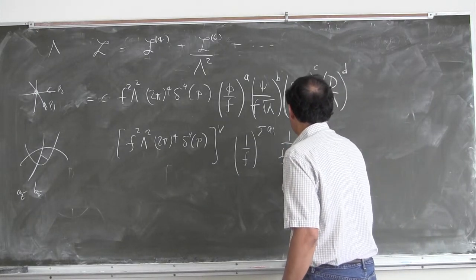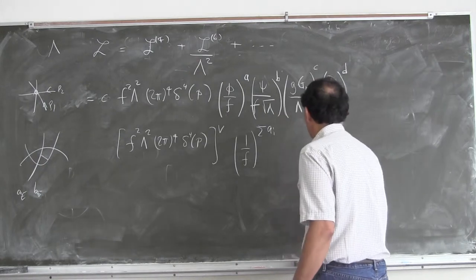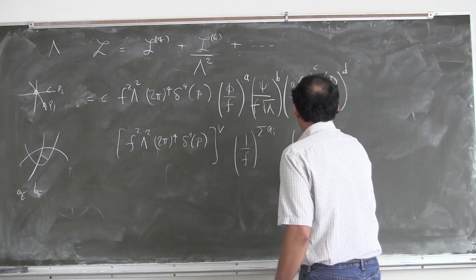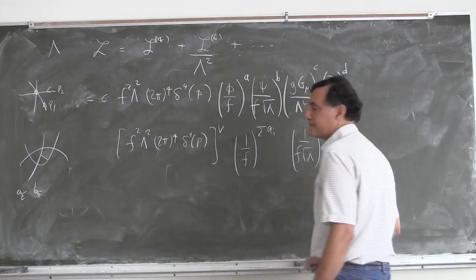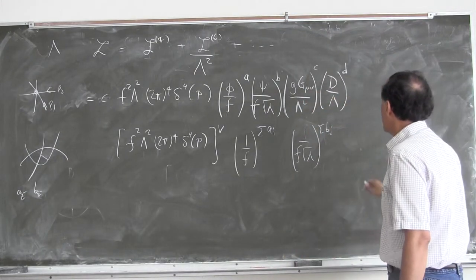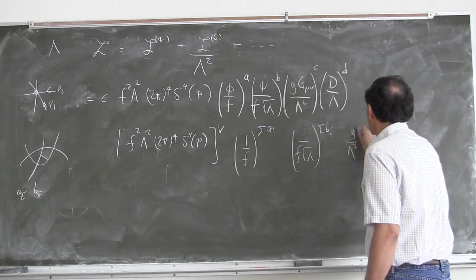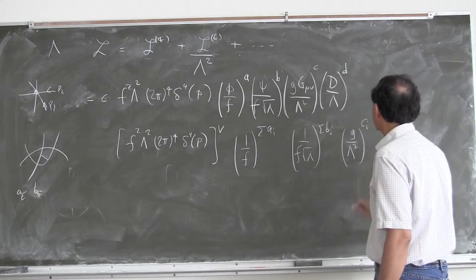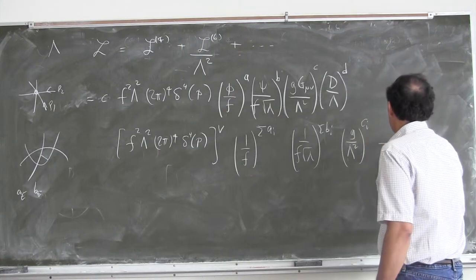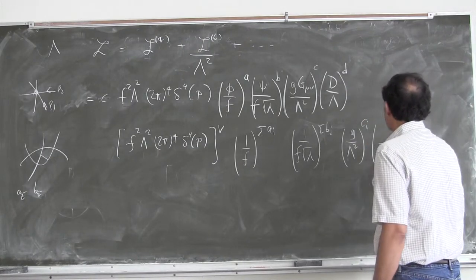Similarly, I get 1/(f sqrt(lambda)) to the sum of the b_i's. For the gauge fields, I get g/lambda-squared to the c_i, and then 1/lambda to the d_i for the covariant derivatives.